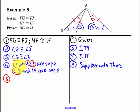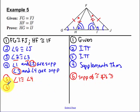So 1 and 4 are supplements of congruent angles. So then I can say 1 is congruent to angle 4. So 1 and 4 are congruent by supplements of congruent angles are congruent.